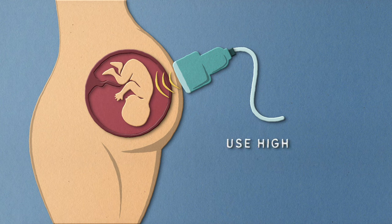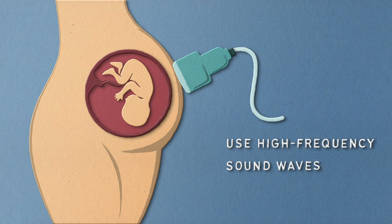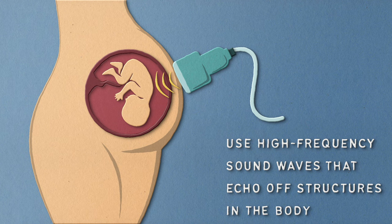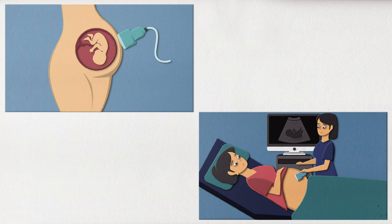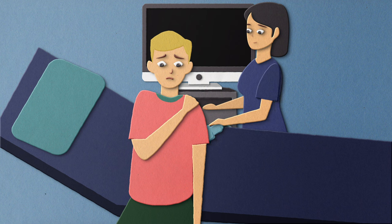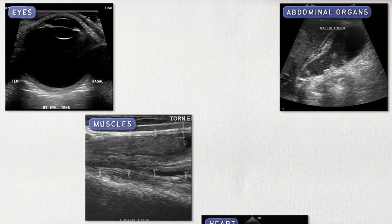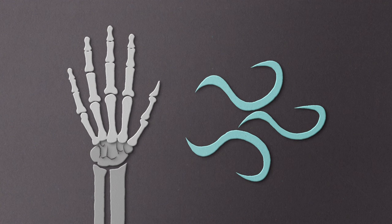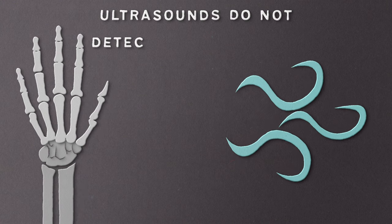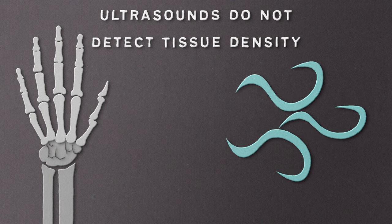Ultrasound probes use high-frequency sound waves — well above the threshold for human hearing — that echo off structures in the body. These reflected waves are then captured by a computer, creating an image. Ultrasounds can be used for a range of imaging needs: in orthopedics to investigate rotator cuff injuries, and doctors also commonly use them to image the eyes, muscles, abdominal organs, or heart. Ultrasounds do have their limitations though — since they do not detect tissue density, structures that readily reflect echoes but have very different densities, such as bone and air, may both appear white on the ultrasound.